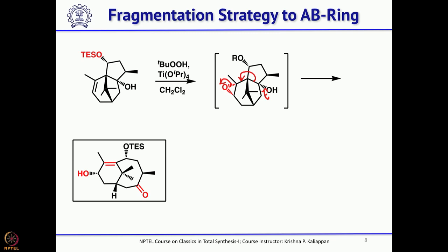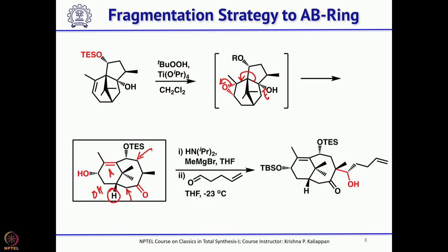If you look carefully at the A ring, it has all the functional groups present except at the bridgehead position, where you should have an OH — but what you have is H. And the B ring needs another oxygen functional group, and here also you need another oxygen functional group. Let us see how he moves forward to complete the total synthesis.